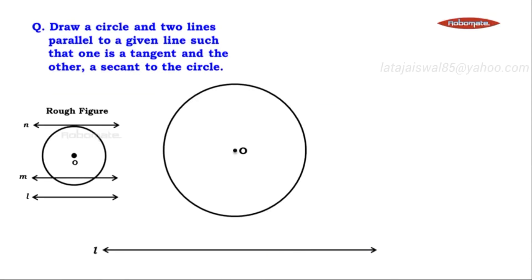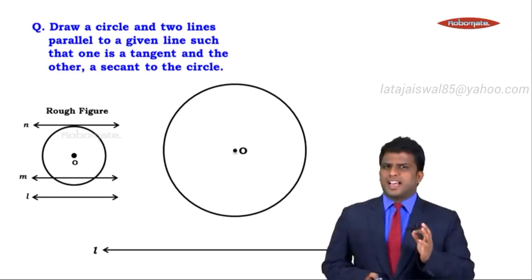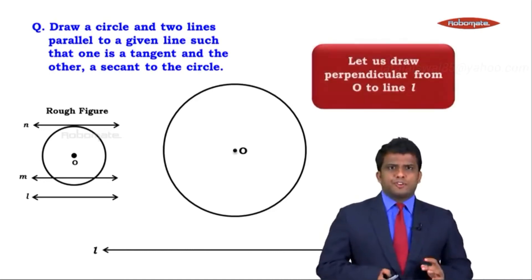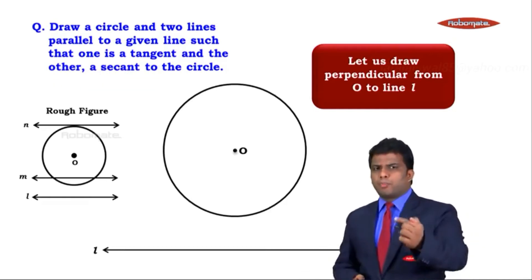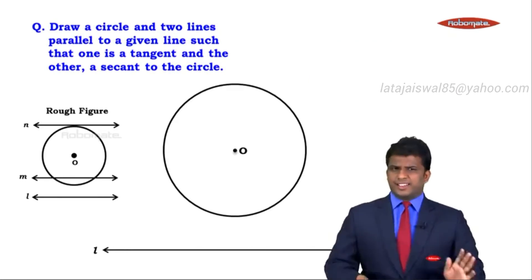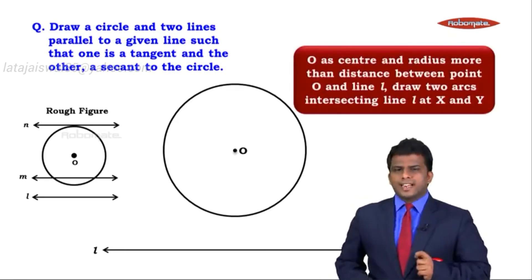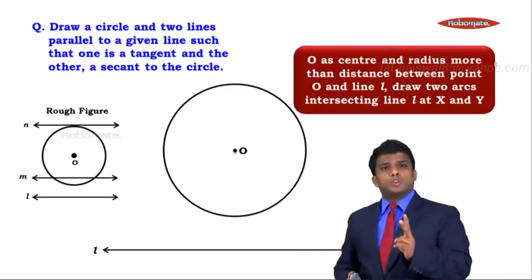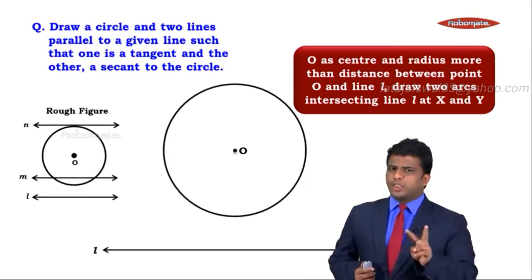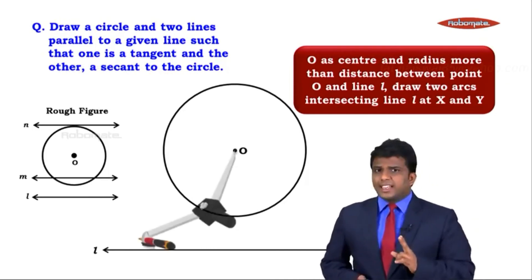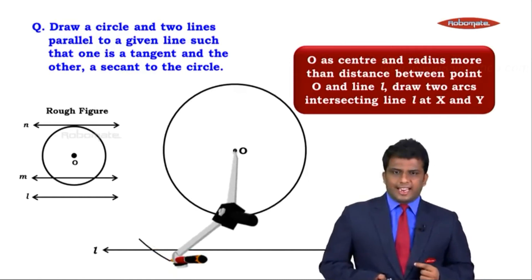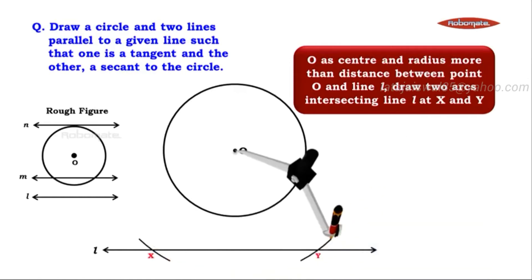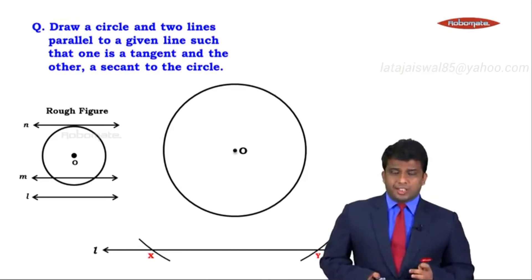Now we need two more lines which are parallel. First, let us draw a perpendicular from point O to line L. We take a compass with O as center and a radius more than the distance between point O and line L, and draw two arcs intersecting line L at two distinct points X and Y.